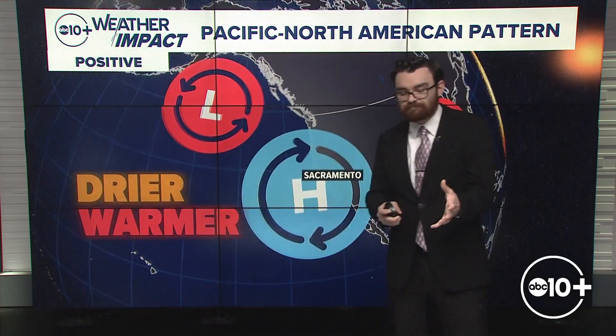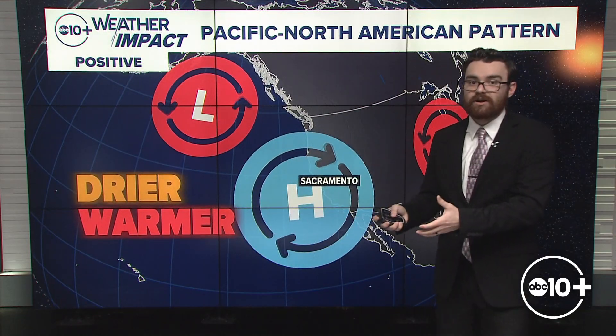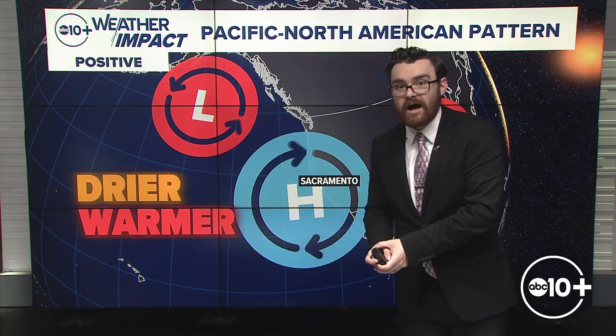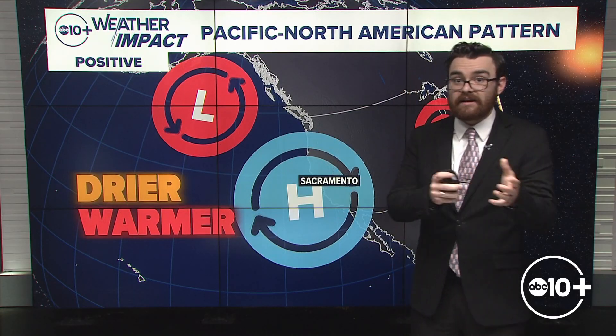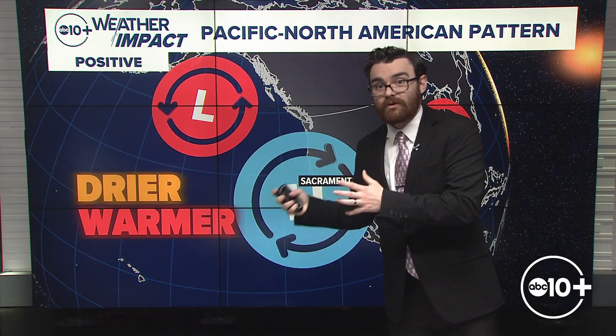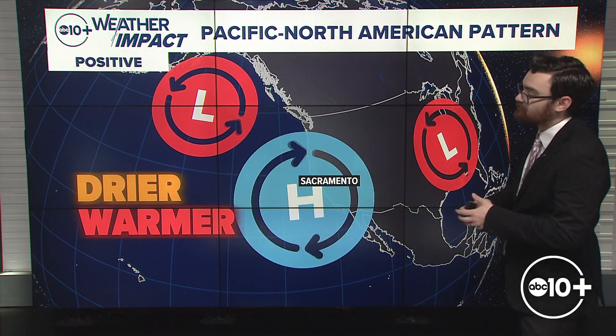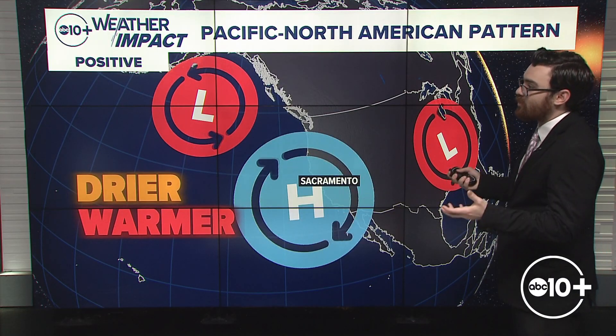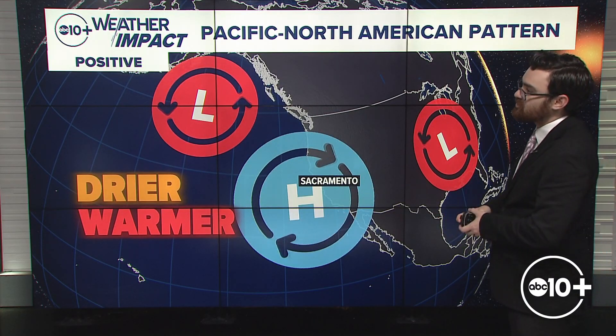But then you look at 2017-18, just 76% of average in the Sacramento Valley — it can definitely go back and forth. That's why I say it's not the controlling factor as to whether an El Niño year is a wet year or a La Niña year is a dry year. It definitely sets up the pattern, but there are exceptions.